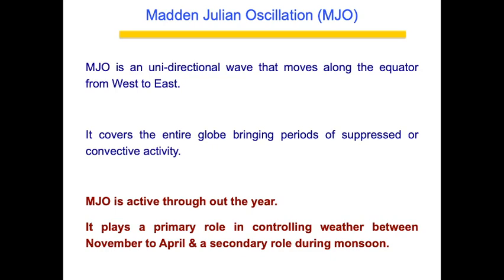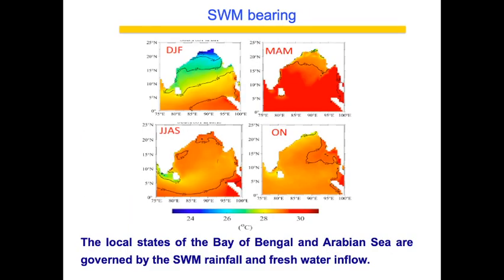MJO is active throughout the year but plays a primary role in controlling weather between November to April, which overlaps with the Northeast monsoon. So Northeast monsoon is completely controlled by MJO; there is no role of MISO in Northeast monsoon. I said Southwest monsoon has a bearing on Northeast monsoon: the amount of rainfall during Southwest monsoon decides the state of the Bay of Bengal and Arabian Sea, which are the basins that drive all monsoon seasons for India.